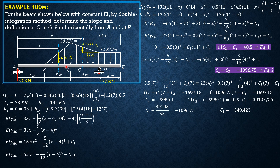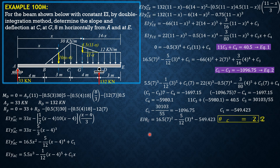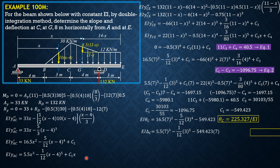Now we can compute theta C and delta C. Substituting X equals 7 into EI Y' AC: EI theta C equals 16.5(49) minus (5/12)(3)⁴ plus (negative 549.423), giving theta C equals 225.327/EI. For delta C, substituting X equals 7 into EI Y_AC: EI delta C equals 5.5(343) minus (1/12)(3)⁵ plus (negative 549.423)(7), giving delta C equals negative 1979.711/EI.